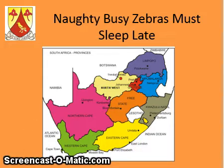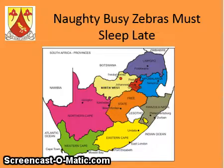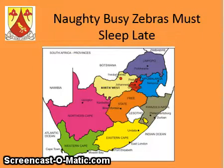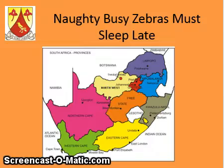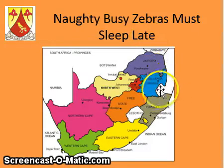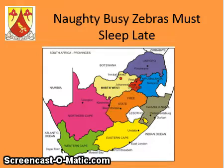There's no easy way to remember all of this, you need to learn it off by heart. But I can give you a little clue for the neighboring countries. You'll see the heading: 'Naughty busy zebras must sleep late.' What I've done is I've taken the first letter of each of the neighboring countries — N for Namibia, B for Botswana, Z for Zimbabwe, M for Mozambique, S for Swaziland, and L for Lesotho — and I've made a funny little sentence: 'Naughty busy zebras must sleep late.' And I've done it in the order in which it appears on the map, going from left to right and around.